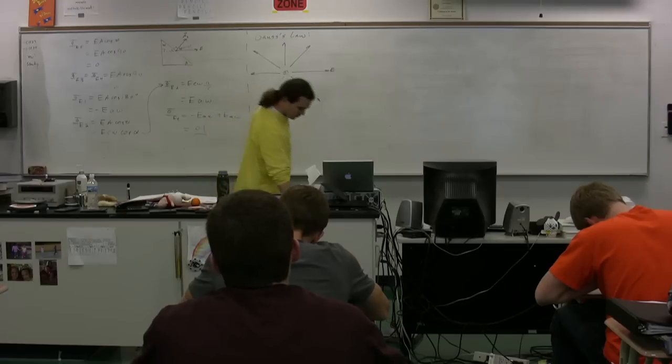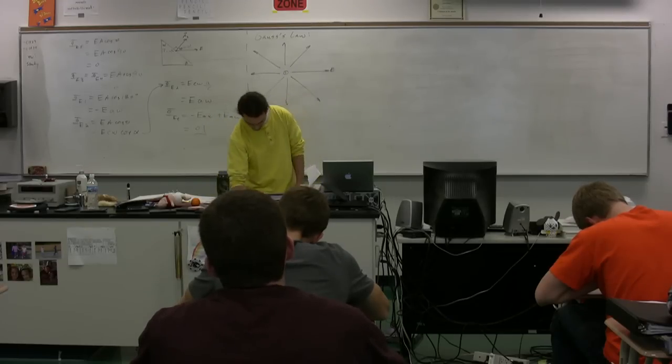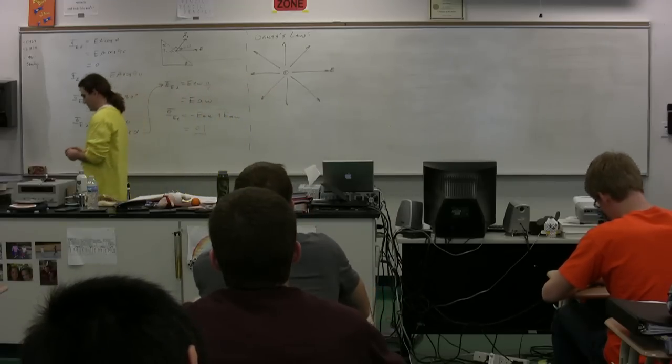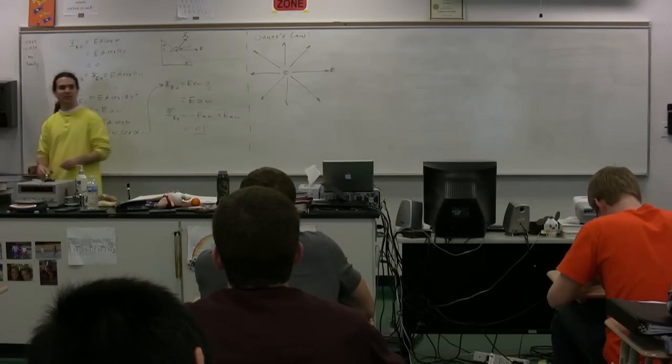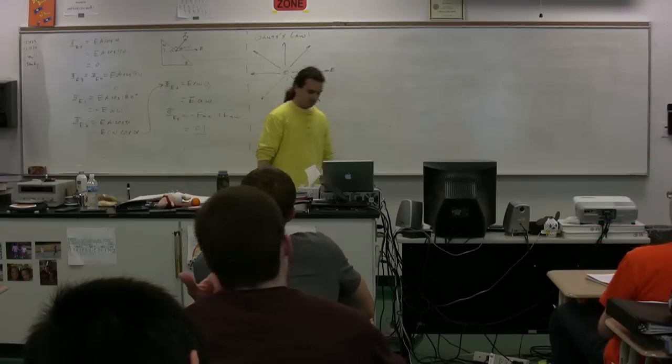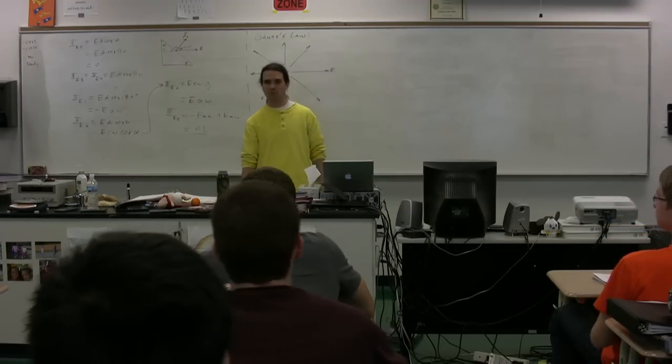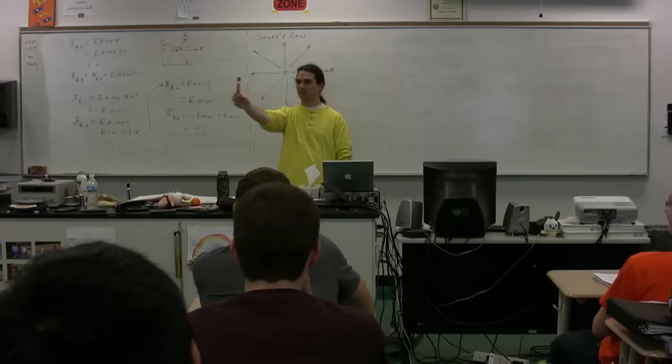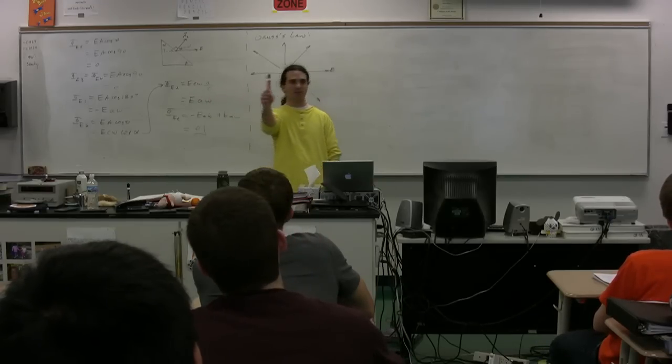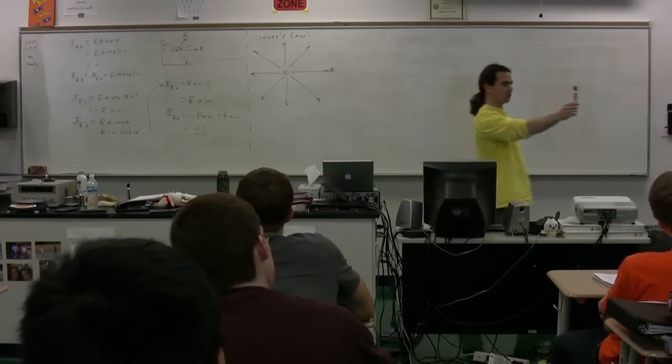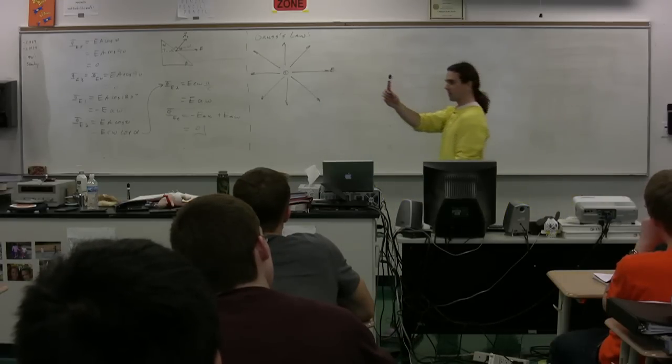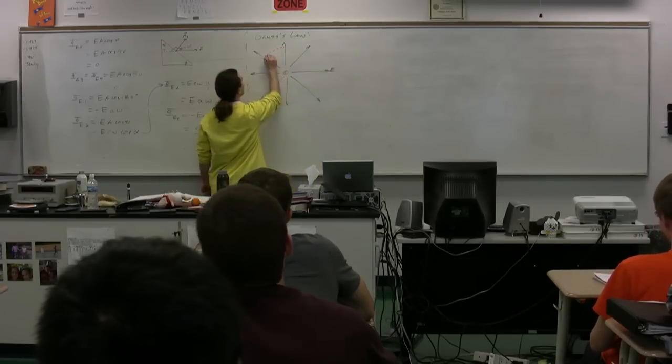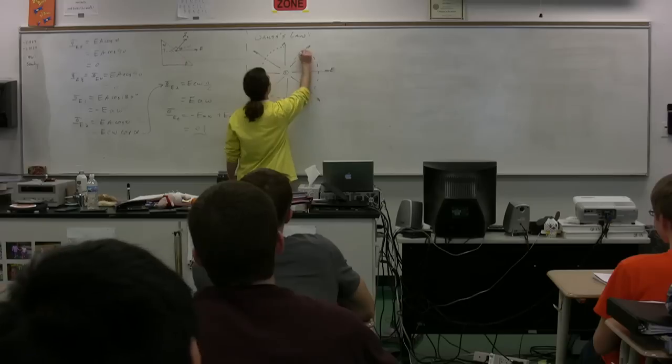In order to prove Gauss's law, we have to draw a Gaussian surface. Gaussian surfaces are so often neglected and forgotten by my students that I have a special marker for them. It is a red marker. Whenever I draw a Gaussian surface on the board, I'm going to use a red marker. This is to remind you that whenever you're using Gauss's law, you have to draw a Gaussian surface. So this is our Gaussian surface.